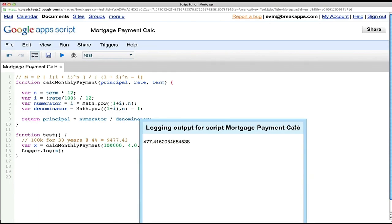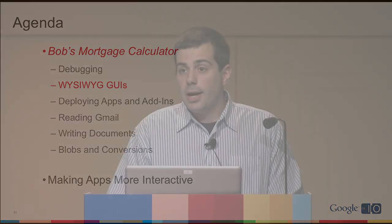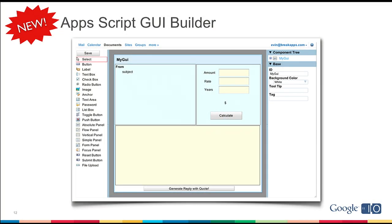We don't want Bob to have to come into the script and edit the code every time he wants to calculate a new monthly payment. What we need is a GUI. How many of you have tried to build a UI using Google Apps Script, using UI app? It's pretty difficult because you have to construct your entire UI in code, which is sometimes complicated and painful. Which is why today we're happy to announce the Apps Script GUI Builder. This is a drag-and-drop GUI Builder — you can create a UI in it, use it from Apps Script, and this is live today. You can go turn it on right now. It's in the file menu.